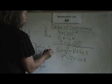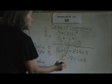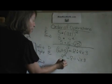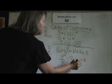Now I am going to complete my exponent second. So I have an exponent. 9 squared is 9 times 9 which is 81. And I bring down the rest of my problem.